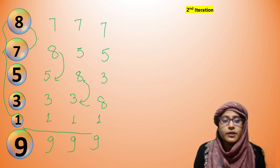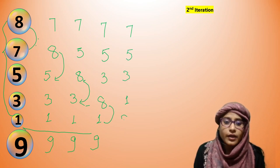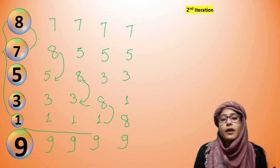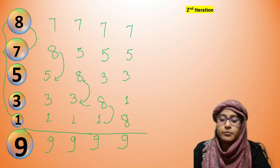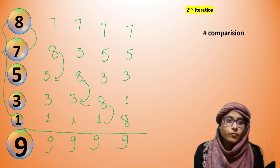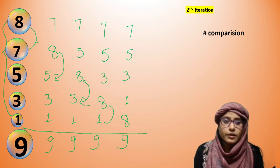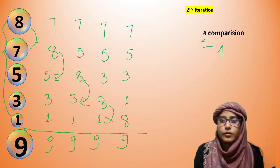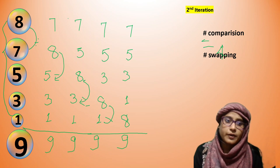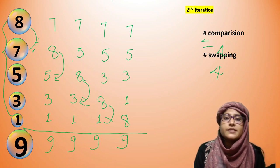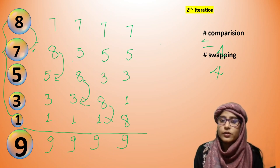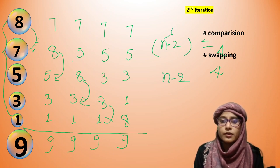Because the last element is already sorted, there is no comparison needed there. Now count: 1, 2, 3, 4 — the number of comparisons is 4. Swappings: 1, 2, 3, 4 — swapping is also 4. In the second iteration we have 5 elements, so total 6 minus 2 = 4. So comparisons = n−2 and swappings = n−2.